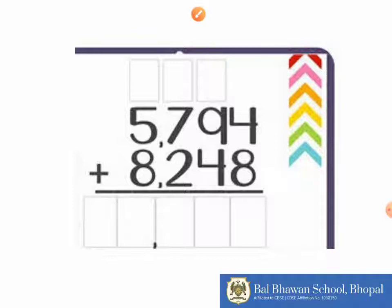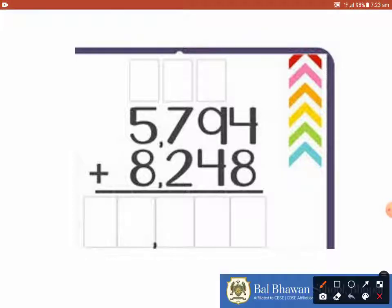Let us try and solve this question as a practice. So here we have 4 plus 8. 4 plus 8 gives you 12. So 1 on the top, 2 at the bottom. Now 9 plus 1 gives you 10 and 10 plus 4 is 14.